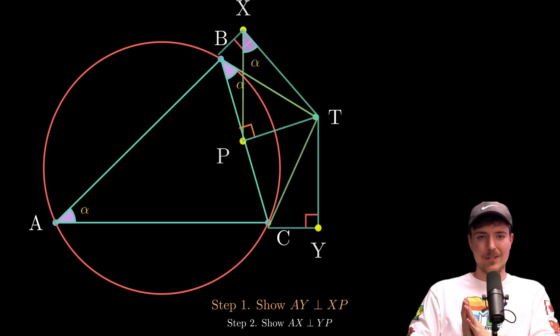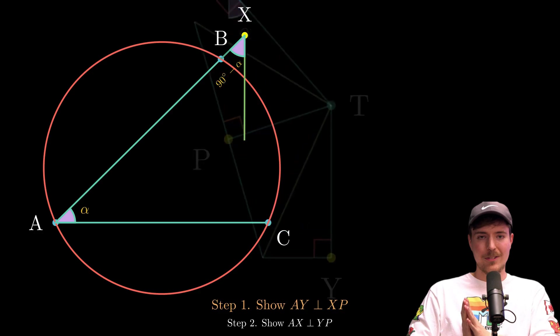The measure of angle AXP is then 90 minus alpha. When you look at it, XP dropping down to AY is as perpendicular as it gets. And that's it for step one.